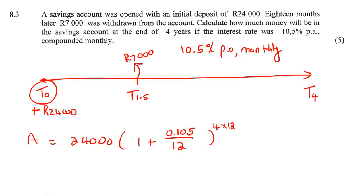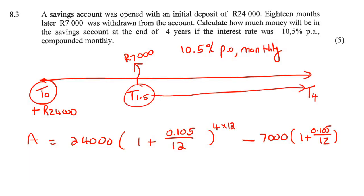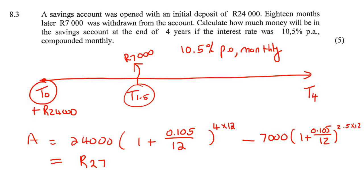Then we move to the next amount — the 7,000. We say minus 7,000, because we're taking the money out. We do the same thing: (1 + 0.105/12). From T1.5 to T4 is 2.5 years, so the exponent is 2.5 times 12, which is 30. We calculate all of this in one step, and the final answer is 27,369.56.